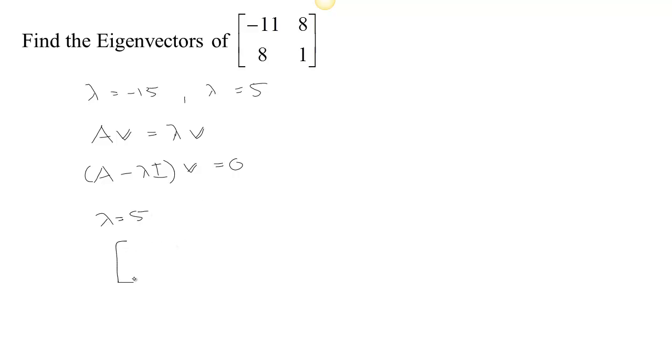If lambda equals 5, then A minus lambda I is negative 16, 8, 8, and 1 minus 5 would be negative 4. So we just want to find the solution, we want to find the values of my eigenvector V1, V2, so that we get the 0 vector 0, 0 here.